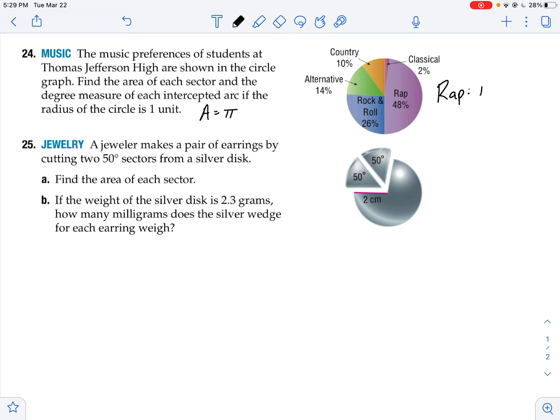So it would be 0.48 times pi would be the area. Now the circumference would be 2 pi r. Well, r is just 1, so 2 times pi times 1, or just 2 pi. So that would be the area of the sector. And the arc length would be 0.48 times the circumference of 2 pi. That would be your arc length.